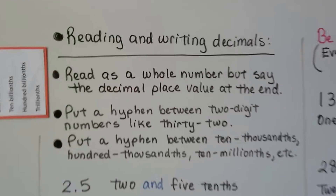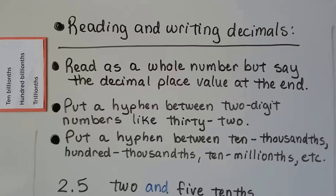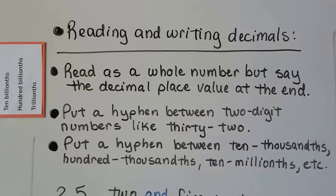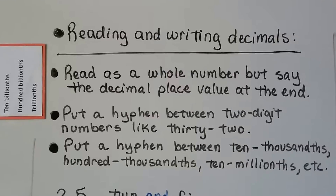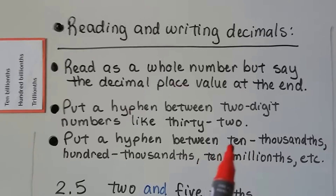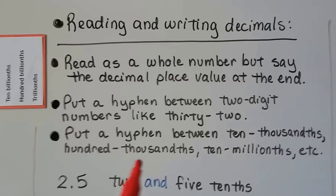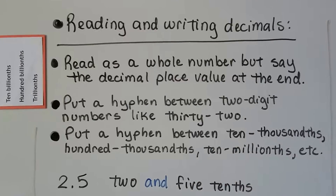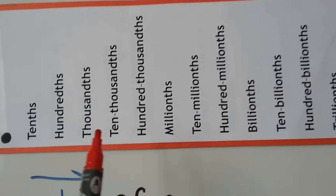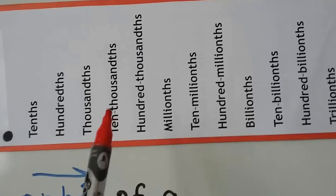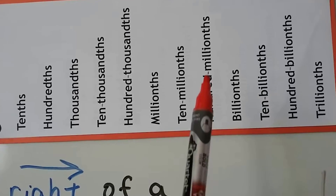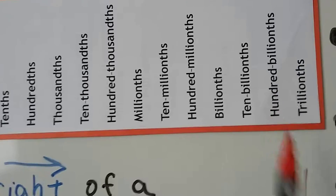So you're going to be reading and writing decimals. There are a few rules to follow. You read as a whole number but say the decimal place value at the end — the THS word. We put a hyphen between two-digit numbers like 32, 47, 56. We also put a hyphen between ten-thousands, hundred-thousands, ten-millions, etc. Tenths, hundreds, thousands don't have a hyphen, but ten-thousands and hundred-thousands do. There's only one word for millions, but then ten-millions and hundred-millions get a hyphen. Ten-billions and hundred-billions get a hyphen too.